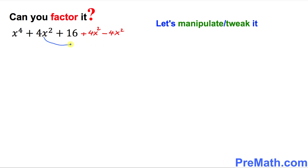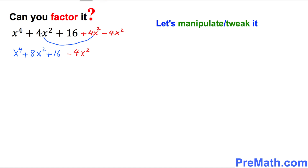The next step: simply add these two quantities — they are like terms. So I can write x⁴ plus 4x² and 4x² becomes 8x² plus 16. Then we already have a negative 4x² — I'm just going to leave it over here.